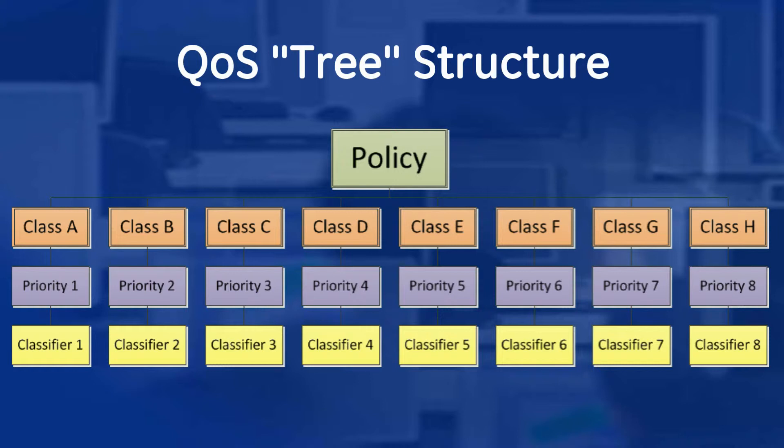Priority values can range from 1 to 16. Each class also contains at least one classifier. Again, the names of the classifiers are arbitrary.